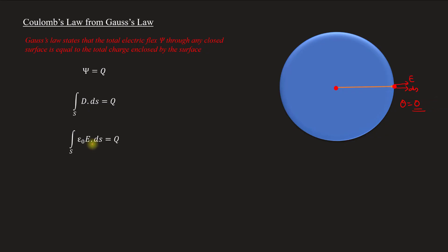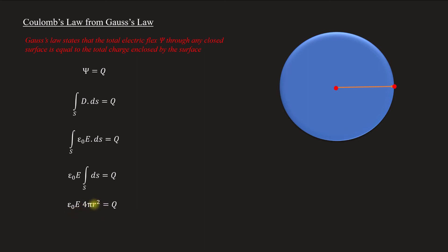Here we have a dot operation. How do you write this expression? I can write it like this: integral over s of E ds. We have a sphere here. This sphere is the complete surface, and its area is 4 pi r squared. So I can write: epsilon zero times E times 4 pi r squared is equal to q.